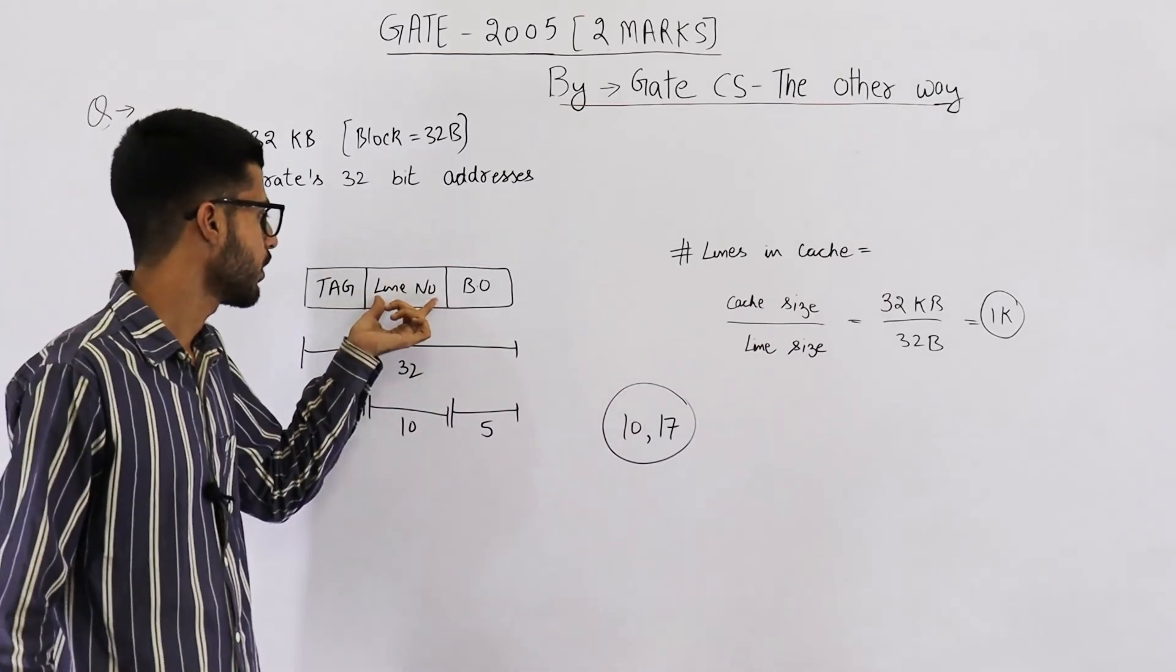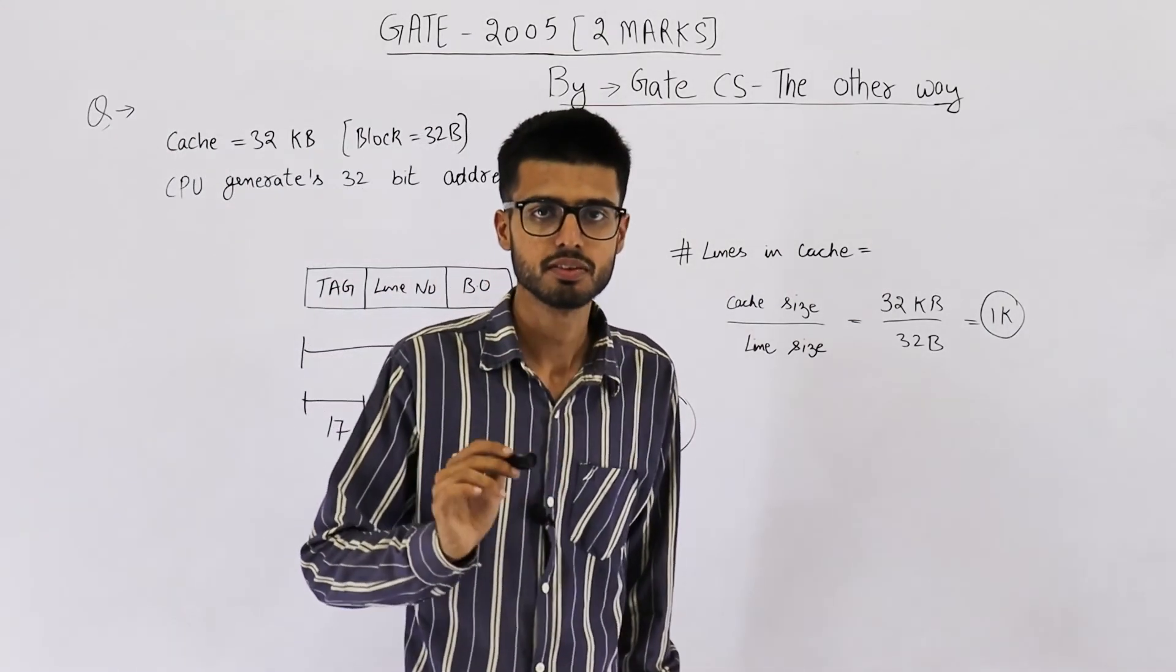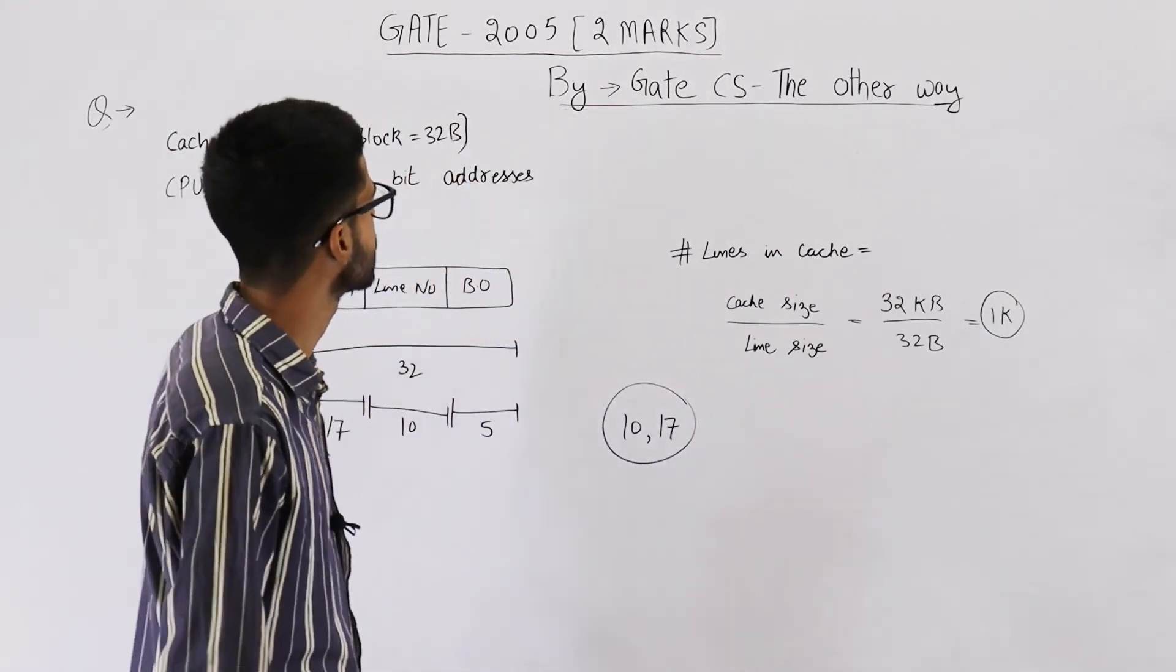Line number or set number is sometimes also referred to as index fields. So your answer is 10 comma 17.